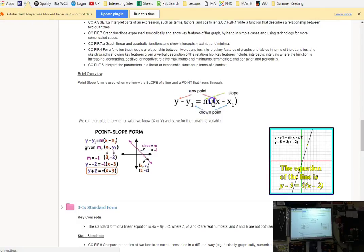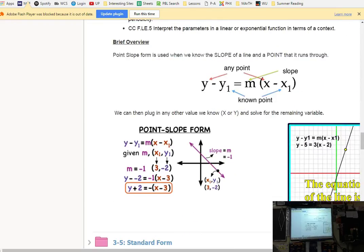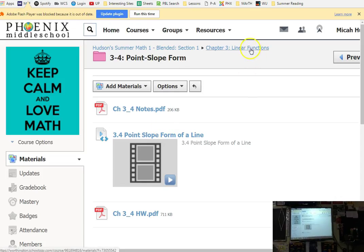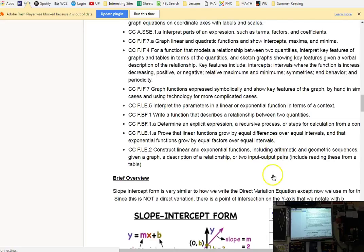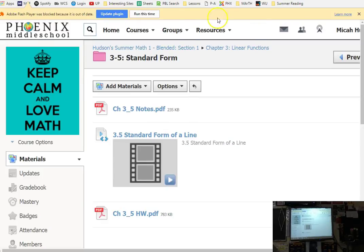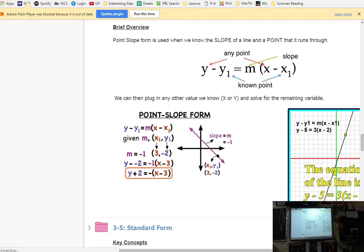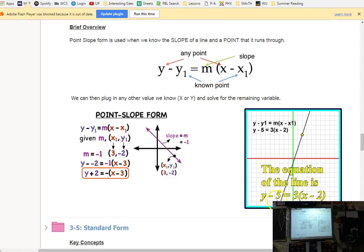The point slope form here. So, this goes through. You've got any point, like the y and the x are your variables. Those are any point that's gonna happen. These values are the point that you know. So, let's say. Take prep. If you know the point. Two, five.